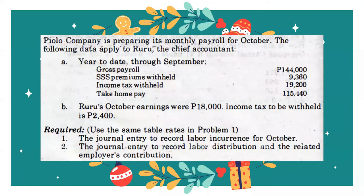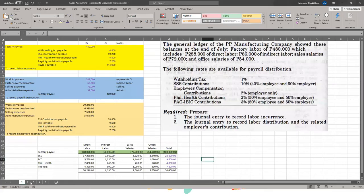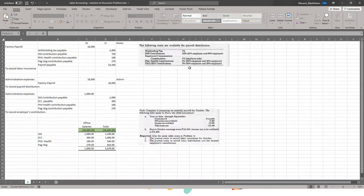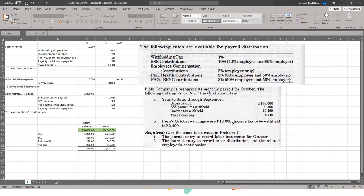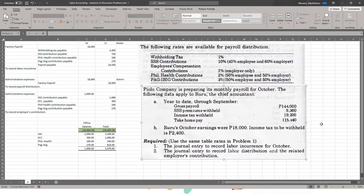Merry Christmas! Discussion Problem Number 2. Requirements: use the same table rates as in Problem 1. (1) Journal entry to record labor incurrence for October; (2) journal entry to record labor distribution and related employer's contribution. Similar structure — let's work through it.